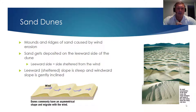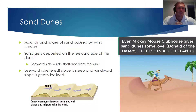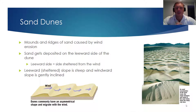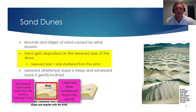Our final consideration in this chapter are sand dunes. Sand dunes are very prominent desert features, and they're one of the first things we often think about when we think of desert landscapes. Sand dunes are mounds and ridges of sand that are caused by wind erosion. In terms of sand dune formation, the sand will actually be deposited on the leeward side of the dune. When we use the term leeward, we mean the side sheltered from the wind.